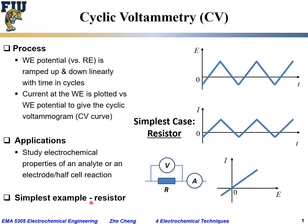The simplest example for cyclic voltammetry is what we showed here: a pure ohmic resistor. You ramp up and down the voltage linearly and measure the current. For a resistor, the current is similarly in phase — linearly up and down. When you plot current versus potential, you get a simple straight line, a linear relationship between current and voltage. That's Ohm's law that you learned in high school.